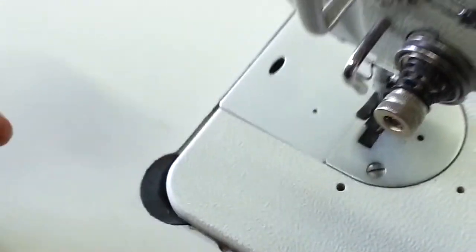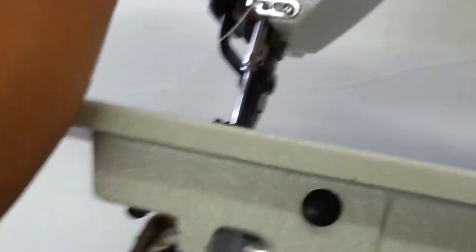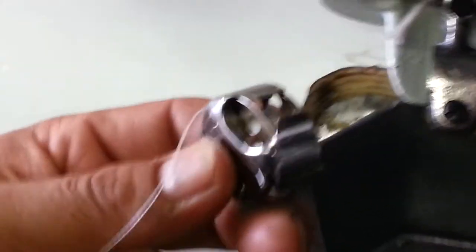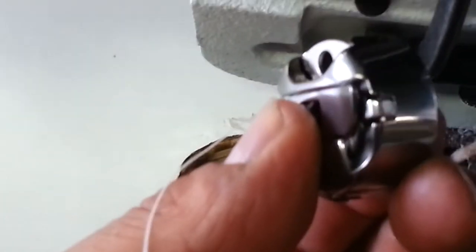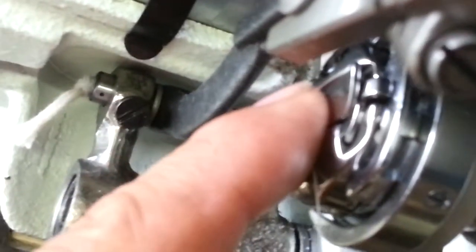And then we'll push the machine back to show you how to put the bobbin in. Now, taking it out and putting it in are two different things. When you put it back, you see how Jose's holding the entire bobbin case? The needle's in the highest position. And the needle, like Jose said, in the highest position.